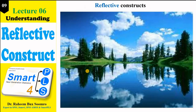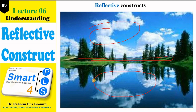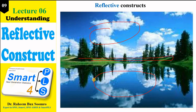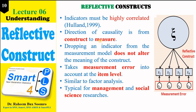Here is one example: whatever is shown in the sky or on the surface of the earth, you see the same thing reflected in the water — the water provides the reflection of whatever is on the surface. Reflective construct indicators are highly correlated; you will find high correlation among all indicators of a reflective construct. The direction of causality is from the construct to the indicator. Dropping an indicator does not alter the overall meaning of the construct.